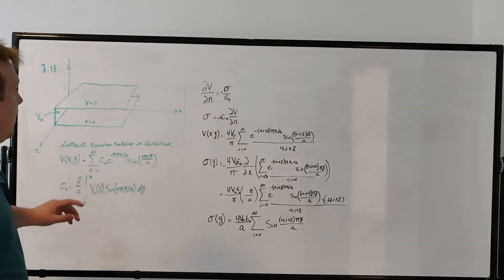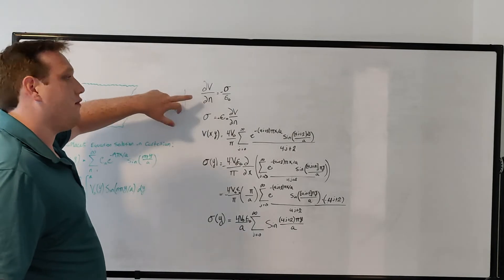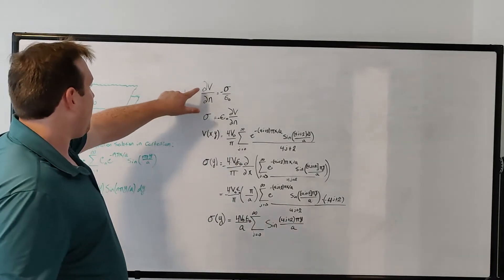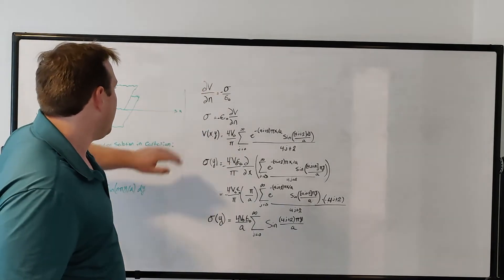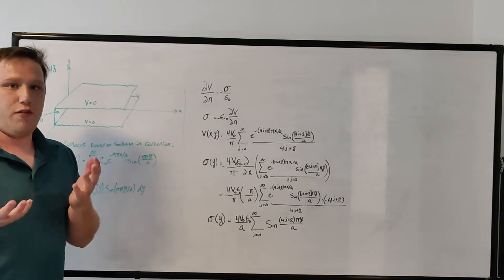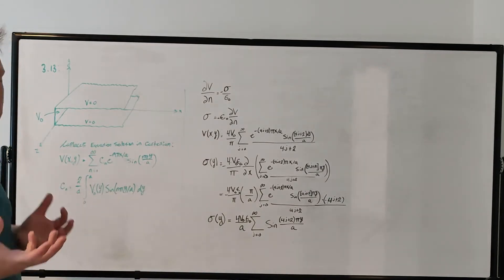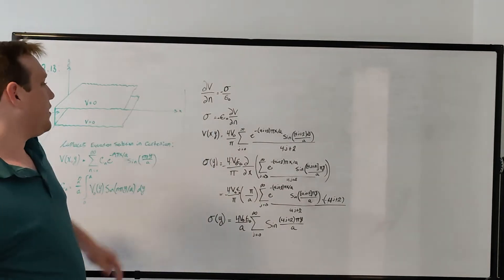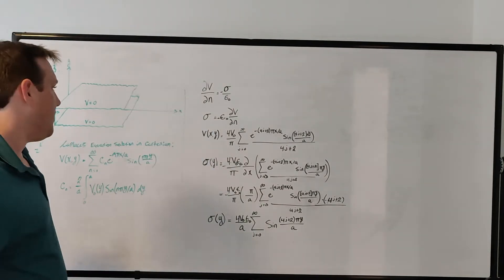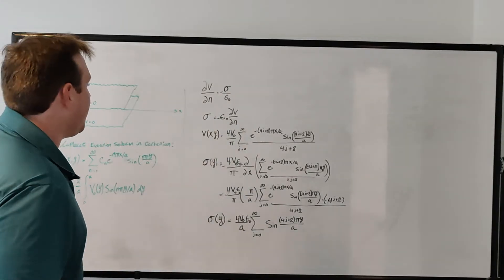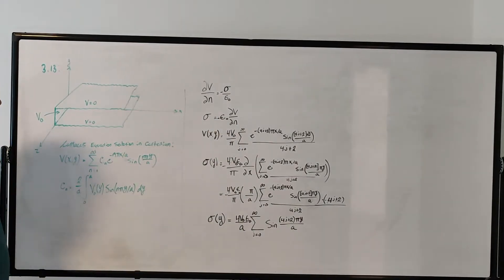From chapter 2, there's an equation that the partial derivative of the potential with respect to the normal direction of the surface that you're interested in is equal to minus sigma over epsilon naught. So this tells us that sigma, which is the charge density, is equal to minus epsilon naught times the partial derivative of the potential with respect to the normal direction.